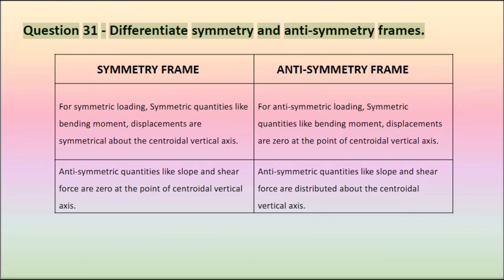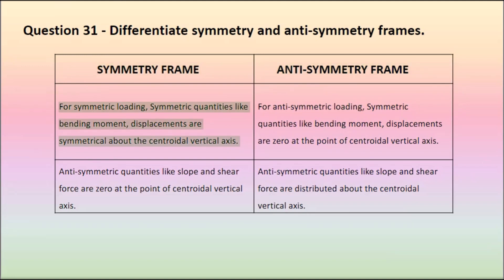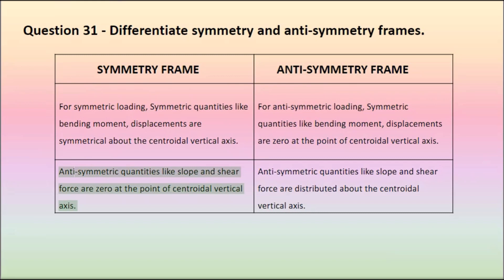Question 31: Differentiate symmetry and anti-symmetry frames. For symmetric loading, symmetric quantities like bending moment and displacements are symmetrical about the centroidal vertical axis. For anti-symmetric loading, symmetric quantities like bending moment and displacements are zero at the point of the centroidal vertical axis. Antisymmetric quantities like slope and shear force are zero at the centroidal vertical axis for symmetric frames, and are distributed about the centroidal vertical axis for anti-symmetric frames.